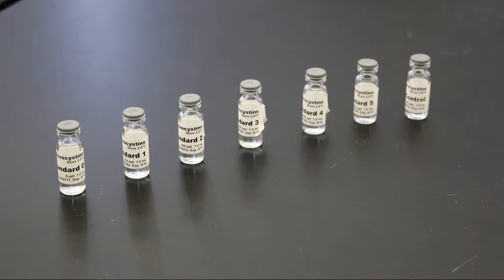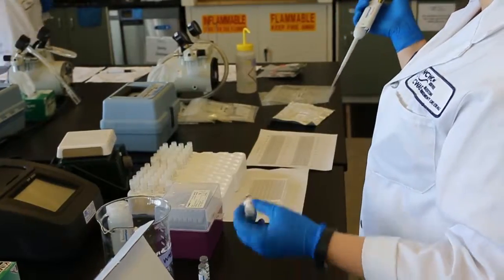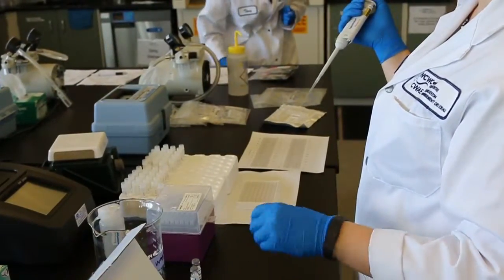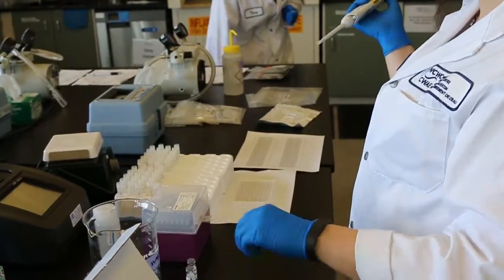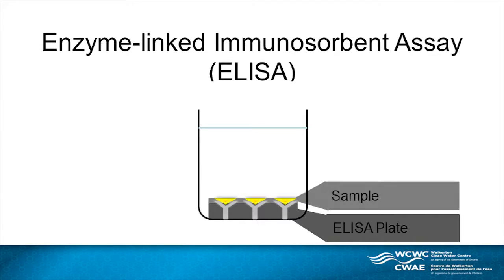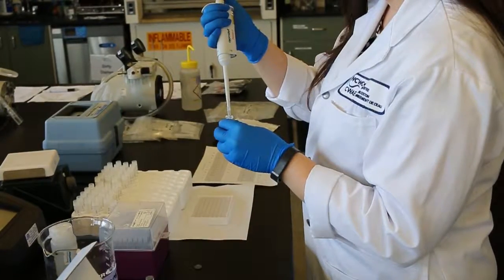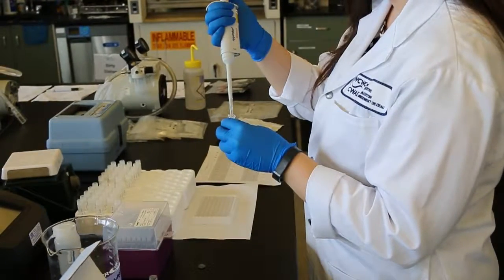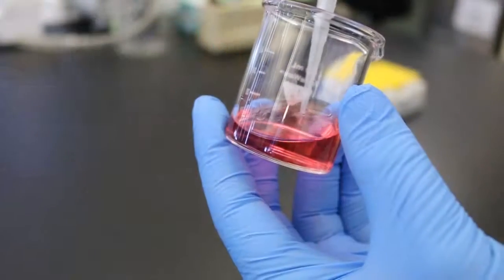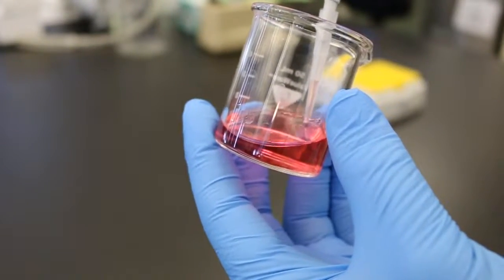50 microliters of each standard solution, control, and sample are pipetted into the wells of a test plate using a new pipette tip for each sample. It is recommended to pipette each sample in duplicate or triplicate to ensure accurate results. All pipette tips should be conditioned as best practice.